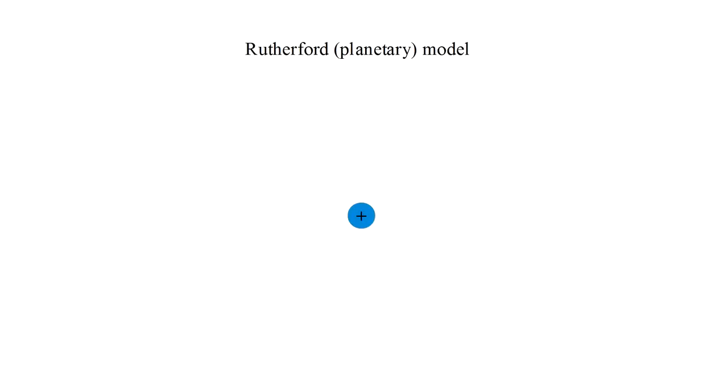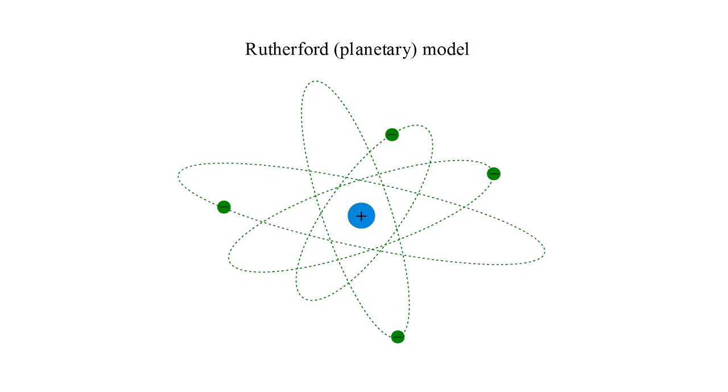The Rutherford, or planetary model, resembled the solar system. The nucleus, like the sun, formed the center and contained the great majority of the mass. Around this moved the electrons, in orbits analogous to those of the planets. In place of gravity we have the electrical attraction between the positive nucleus and the negative electrons. Like the solar system, most of the atomic system is empty space, and its extents are determined by orbits, not the sizes of its individual components.